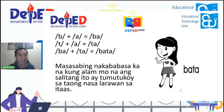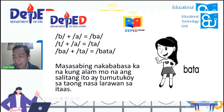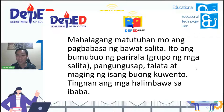Alam mo na bang basahin ito? Bata — mula sa mga letrang B, A, T, A, o sa mga tunog na b, a, t, a — magiging bata. Mahalagang matutunan mo ang pagbabasa sa bawat salita. Ito ay bumubuo sa parirala o grupo ng mga salita, pangungusap, talata, at maging sa isang buong kwento. Upang maintindihan mo ang isang kwento, dapat muna alam mo ang pagbabasa ng mga letra.